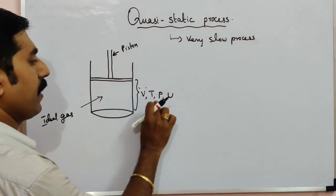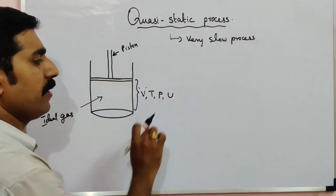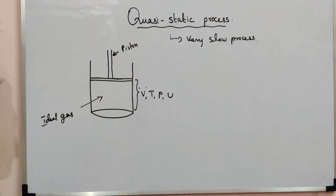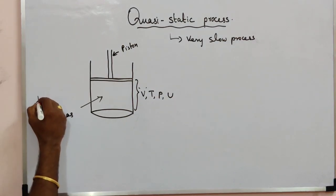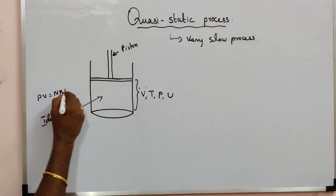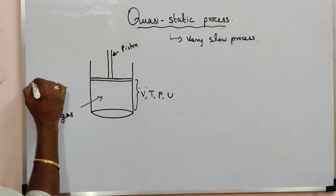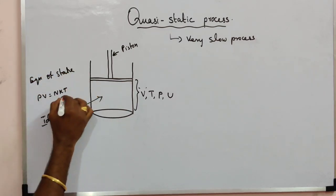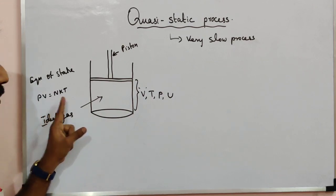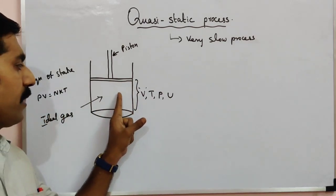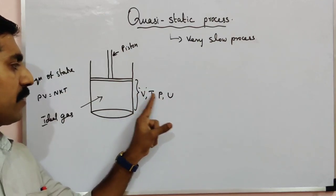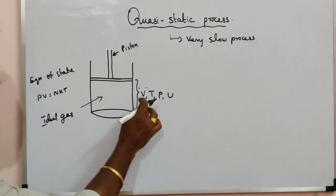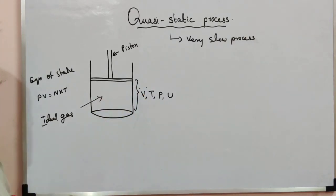The gas has properties: volume, temperature, pressure, and internal energy. We can relate these using the equation of state: PV = NKT. With the help of this equation, we can determine the volume, temperature, and pressure of the gas, and also the internal energy of the gas.